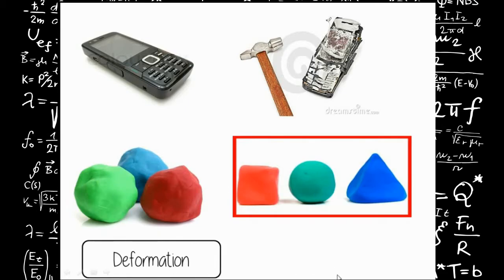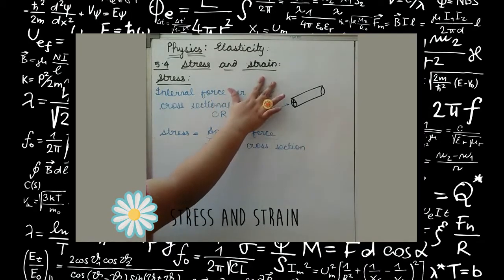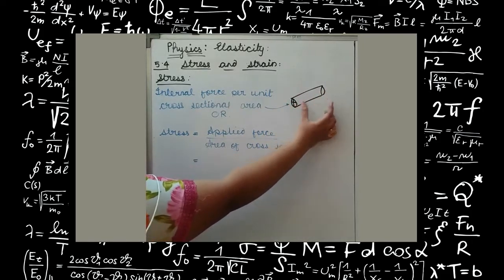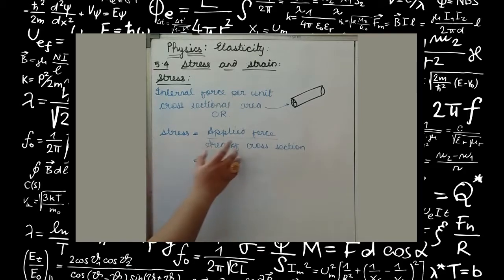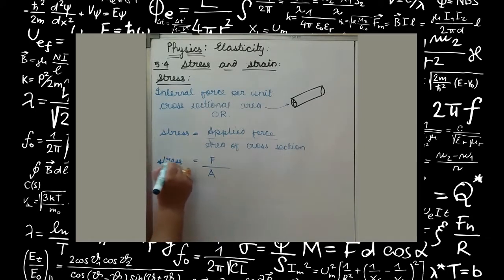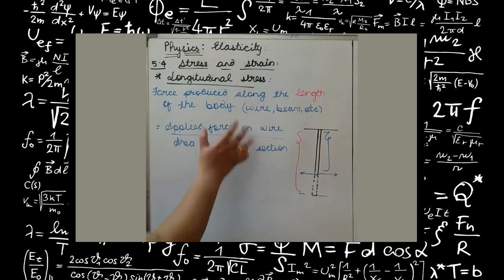Stress is nothing but internal force per unit cross-sectional area. Suppose this is a fragment of a wire — the area drawn across it is known as cross-sectional area. The formula for stress is applied force per unit cross-section, written as F/A, where F is the applied force and A is the area of cross-section. The SI unit of stress is Newton per meter square, since the unit of force is Newton and the unit of area is meter square.